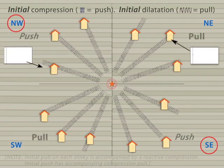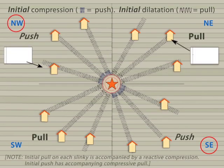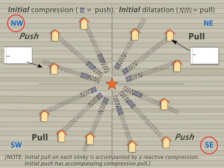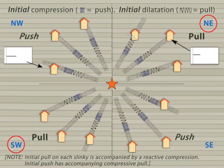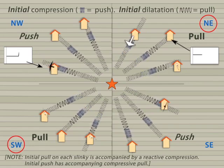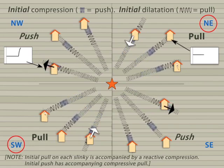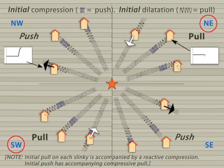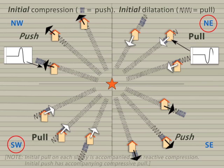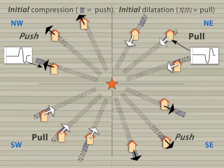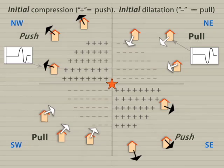Northwest and southeast of the epicenter, the rock is compressed, and the first arriving P waves at those stations are pushes away from the epicenter. Northeast and southwest of the epicenter, the rock is stretched, and the first P waves are pulls toward the epicenter. The dilatational and compressional arrivals are often shown as plus and minus signs, respectively.